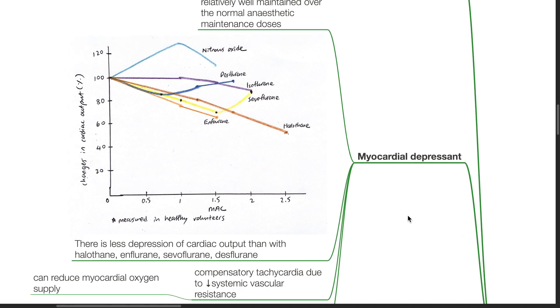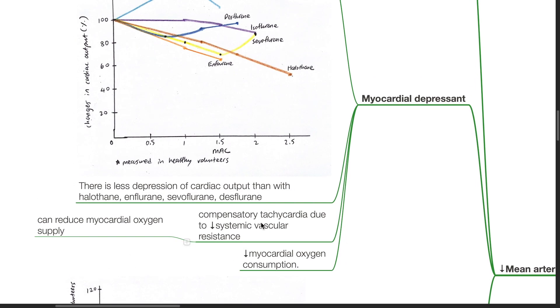There is less depression of cardiac output than with halothane and enflurane, sevoflurane and desflurane. Compensatory tachycardia due to decreased systemic vascular resistance occurs. Overall, there is decreased myocardial oxygen consumption.